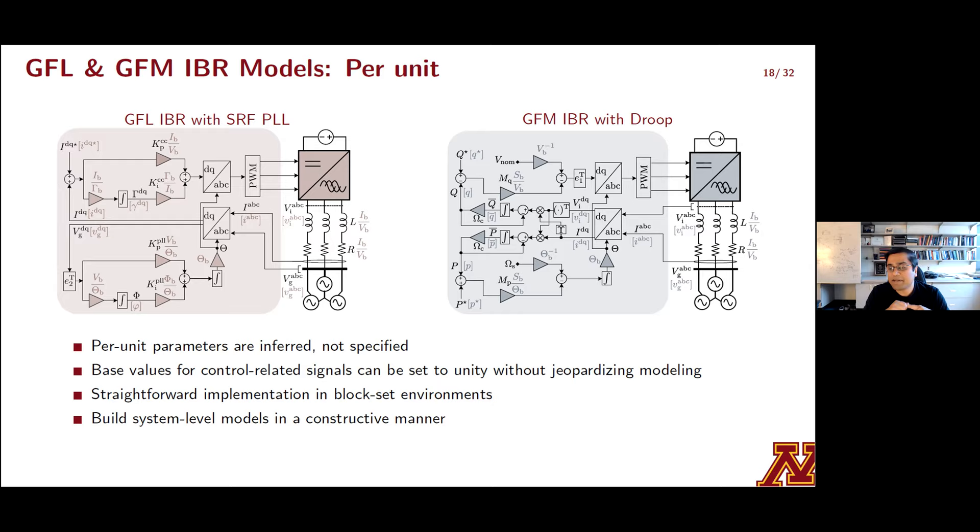Here I'll show you the corresponding per unit transcription. Signals that are in per unit are enclosed in square brackets and they lie alongside their corresponding SI unit signals. Parametric scalings are also captured alongside these original SI unit parameters and these are in shaded red and blue. And a few points are worth emphasizing. Number one, parameters are inferred. They're not calculated a priority. They emerge from the process and they don't drive the process itself. Number two, base values of control signals can actually be set quite arbitrarily without affecting the physical layer signals which might actually carry more deliberate meaning because of device ratings. One easy choice for instance is to set the base values of all control signals universally to unity and the modeling effort just goes through.